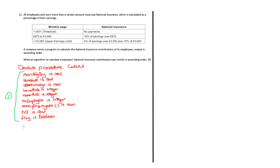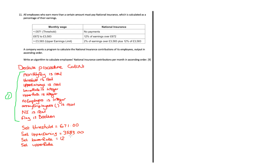The next mark comes from initializing the variables. I set my threshold to 671, upper earnings to 3583, lower rate to 12 (representing 12%), and upper rate to 2. All those initializations come from the table in the question — I'm assigning those values to variables, though it's also fine if you didn't.